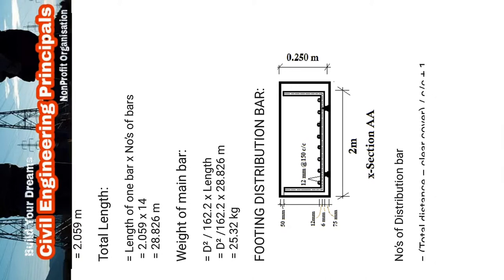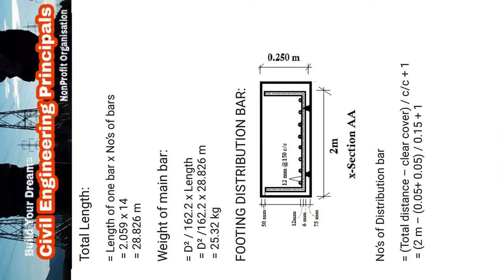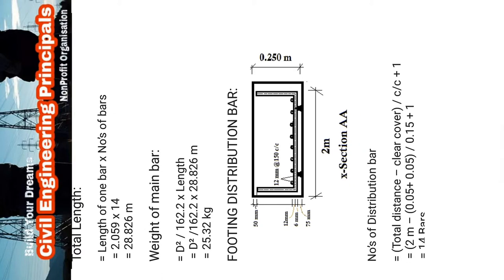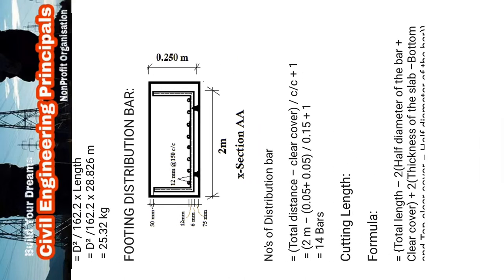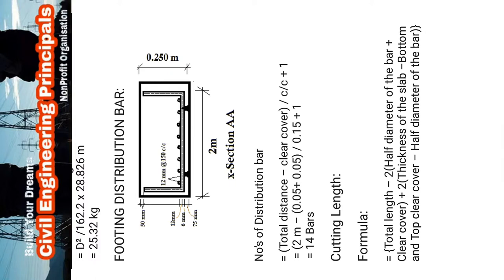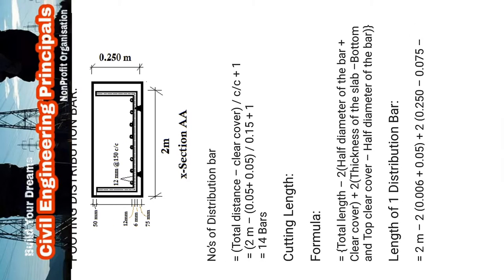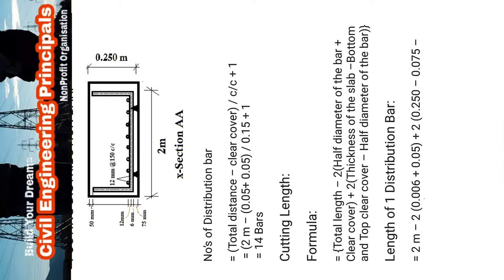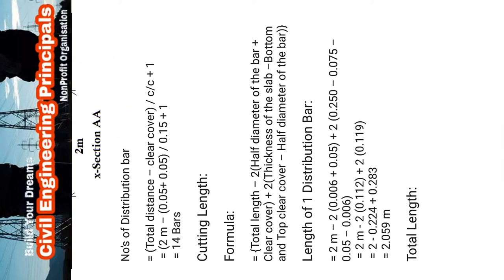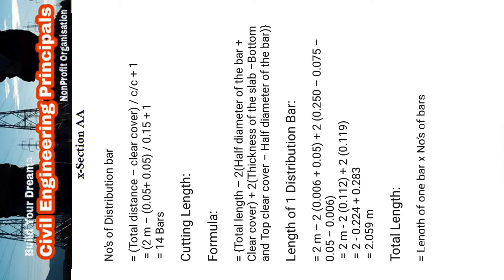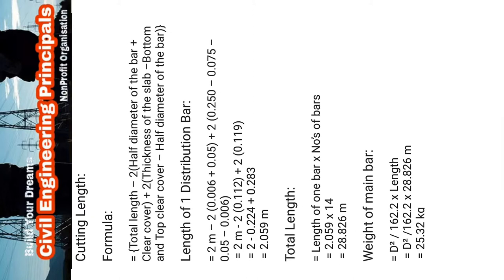Footing distribution bar: you can check cross-section double A. Number of bars formula: total length minus concrete cover, divided by center to center spacing, plus one — giving 14 bars. The cutting length formula is the same as before — check and solve the equation for total length.